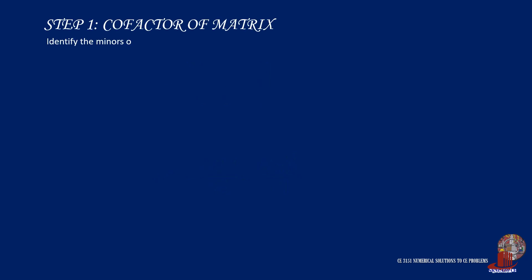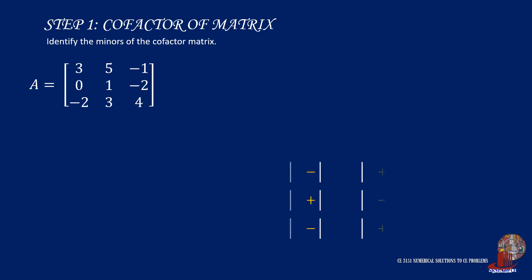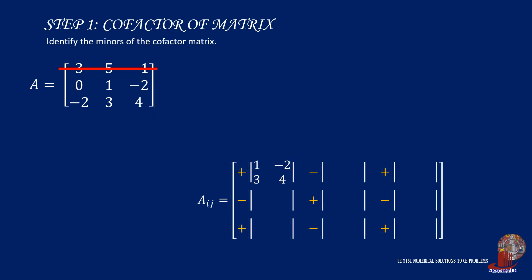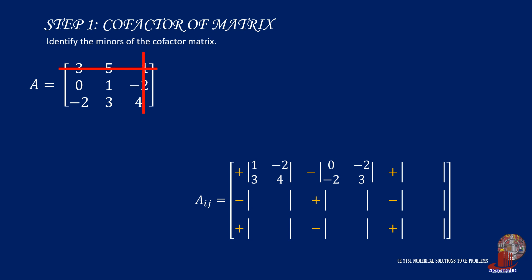Let's start with looking for the cofactor matrix where we need to figure out their minors. We have to provide sign reversal on each minor determinant. If we cover the row and column intersecting element A11, the remaining elements are 1, negative 2, 3, and 4. Now cover the second column and take 0, negative 2, with another negative 2, and 4 as the minors for element A12. Then move the covered column to the right, and 0, 1, negative 2, and 3 are the remaining elements for A13.